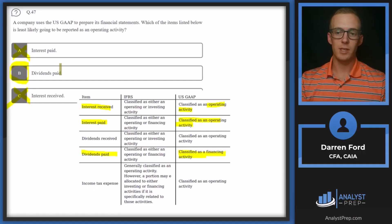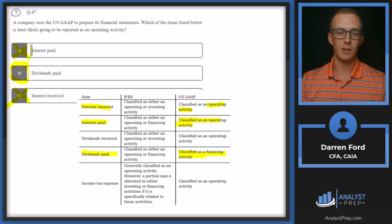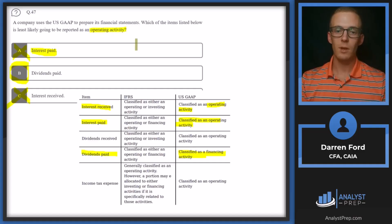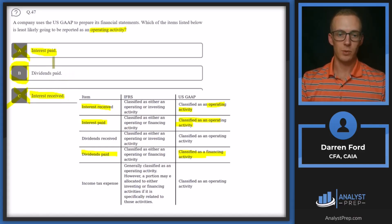Dividends paid are seen as a purely financial activity — you're just giving money back to shareholders, which doesn't really have anything to do with the operations of the business. Whereas interest paid is likely used to finance day-to-day activities, so it falls under operating activity. And interest received, from investing in securities to receive income, also falls under operating activities. So we'll stick with B — dividends paid.